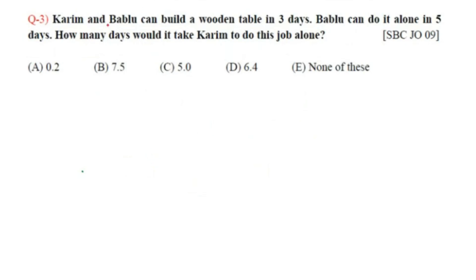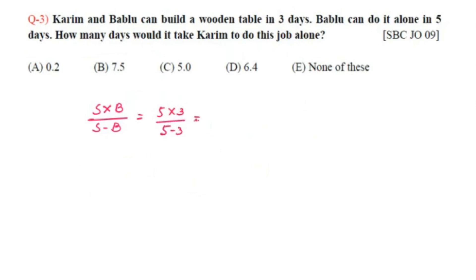Question number 3: Koreem and Bablu can build a wooden table in 3 days. Bablu can do it alone in 5 days. How many days would it take Koreem to do this job alone? Using the time and work formula for single and combined work: Koreem's time = (both together × Bablu alone) / (Bablu alone − both together) = (3 × 5) / (5 − 3) = 15/2 = 7.5 days.